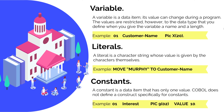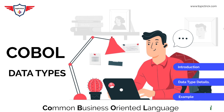A literal is a character string whose value is given by the characters themselves — for example, 'Murphy' being assigned to customer name. A constant is a data item that has only a single value throughout the program. There is no specific way of defining a constant in COBOL; you simply use the value clause to assign a specific value to the variable you are treating as a constant.